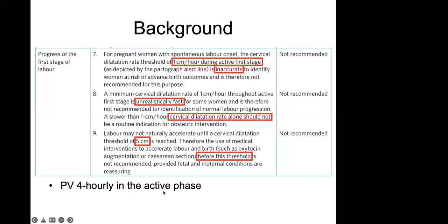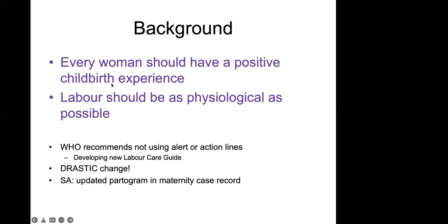The WHO concluded that the one centimeter per hour rule in the active phase is inaccurate to identify women at risk of adverse outcomes, and is unrealistically fast for many women. A slower cervical dilatation rate alone should not be a routine indication for intervention. We should especially withhold interventions before five centimeters, since the latent phase requires time not just for dilatation but also effacement. They also recommend that vaginal examinations in the active phase should be done four-hourly rather than two-hourly. The overall conclusion is that every woman should have a positive childbirth experience and labor should be as physiological as possible.